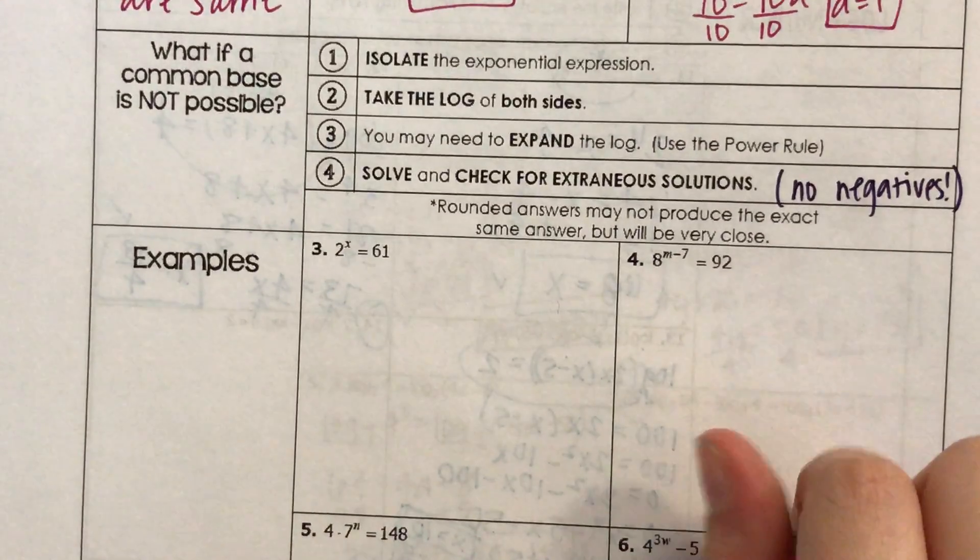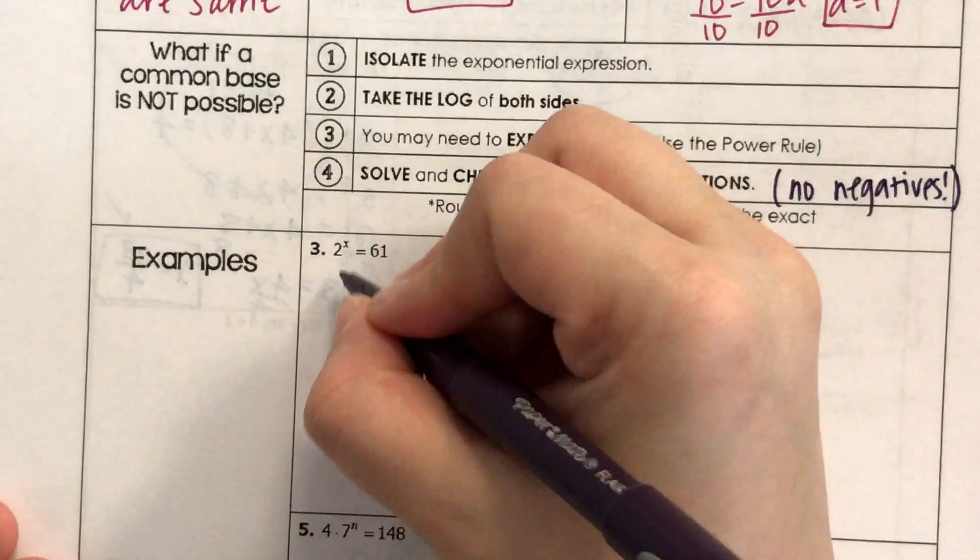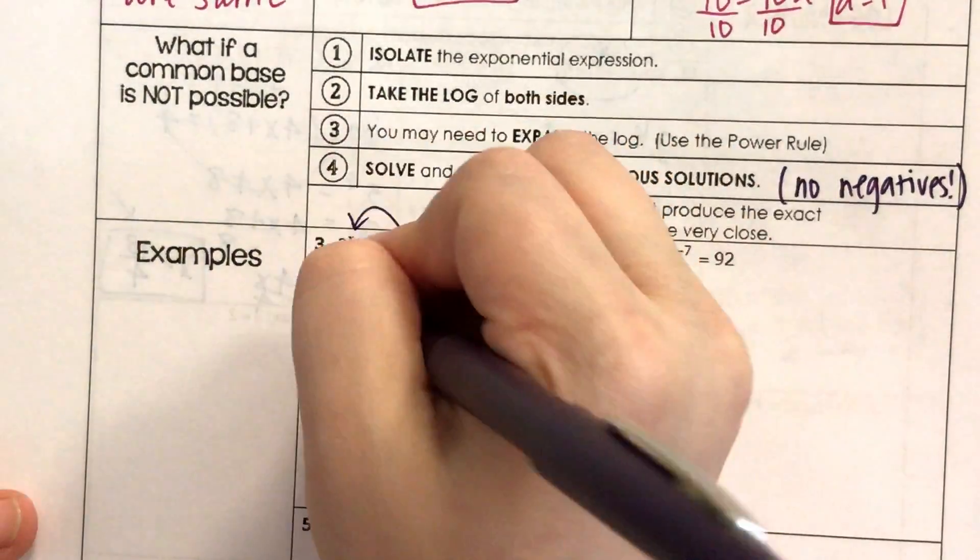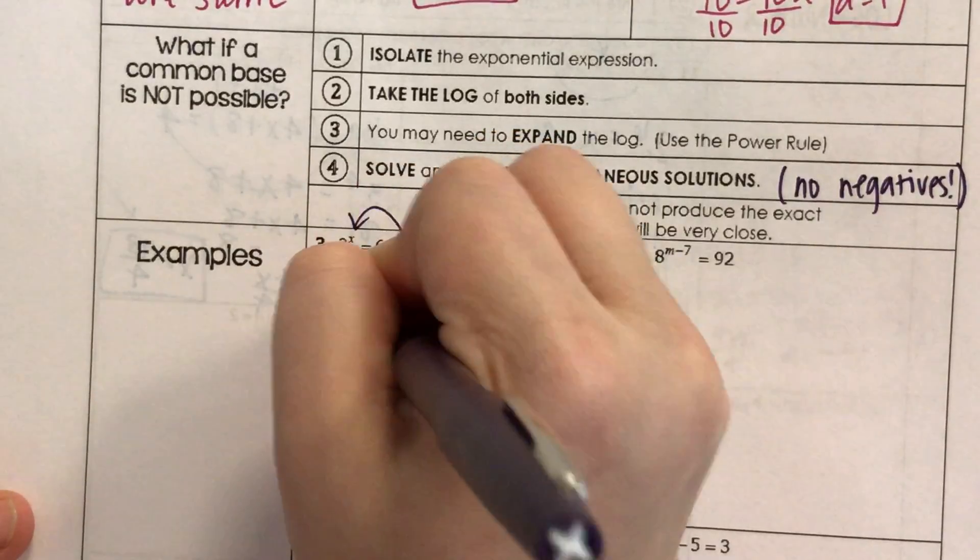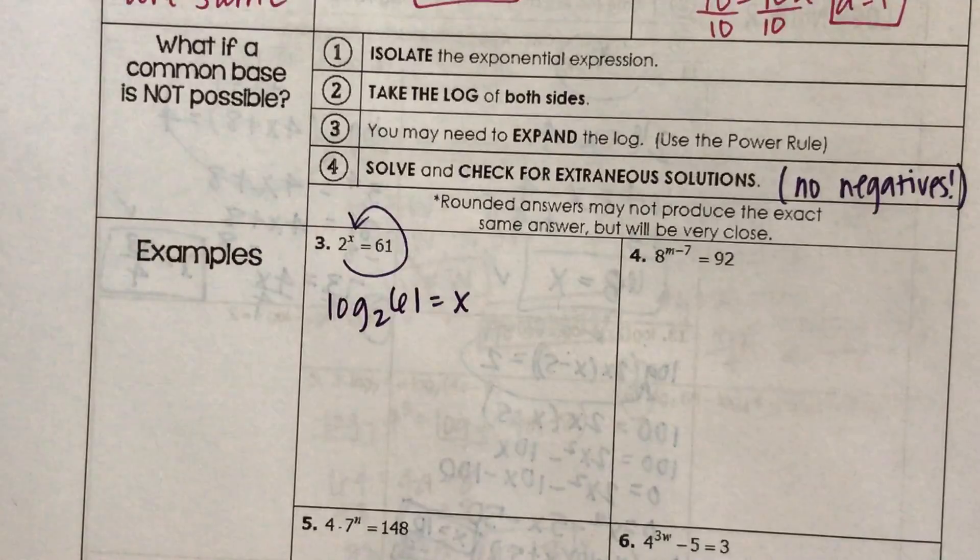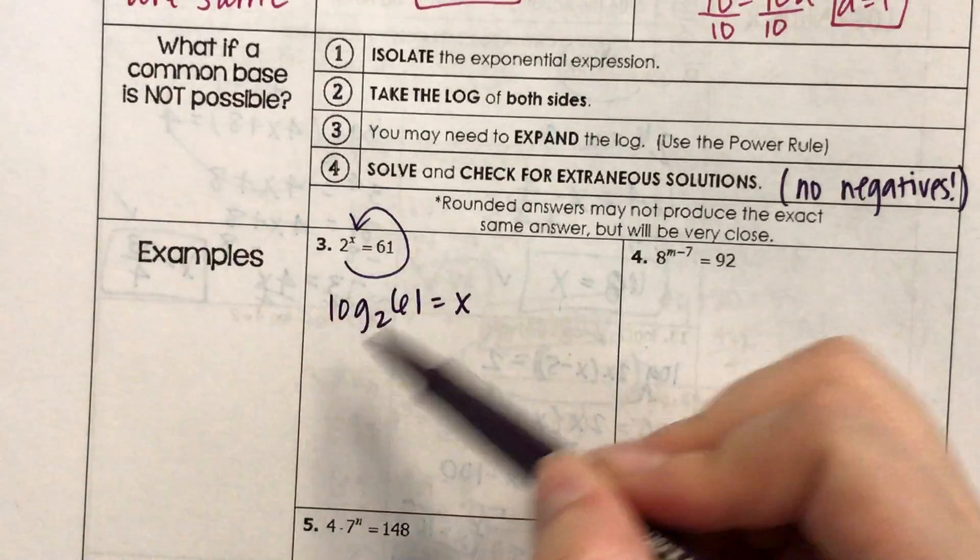Okay, isolate the exponential expression. I did that. Take the log of both sides using the log loop trick. Log base 2 of 61 equals x. Now you can use the change of base formula since I cannot compute that very easily.